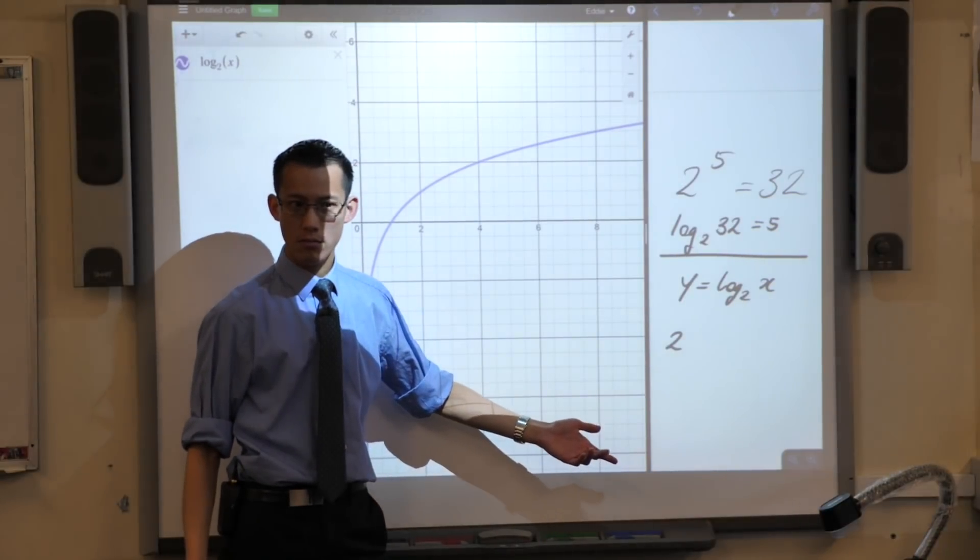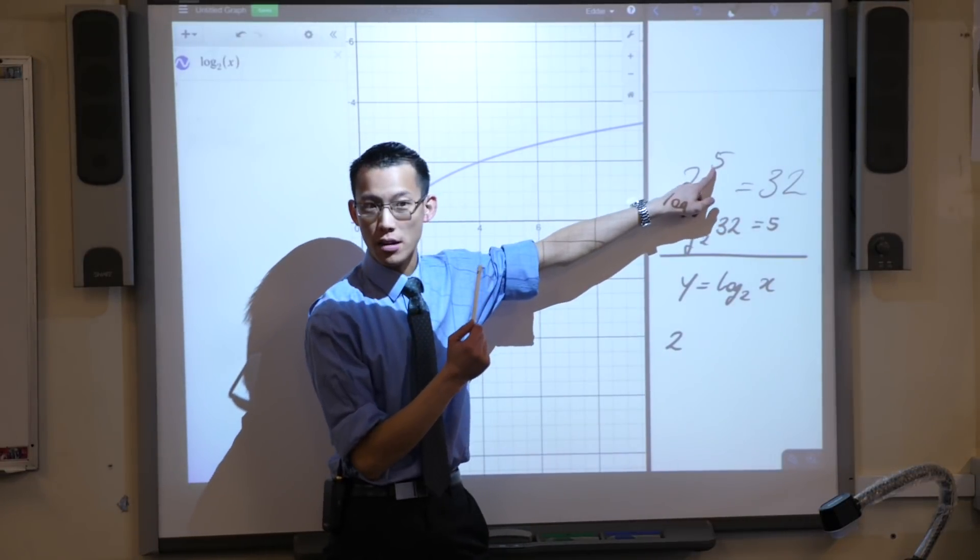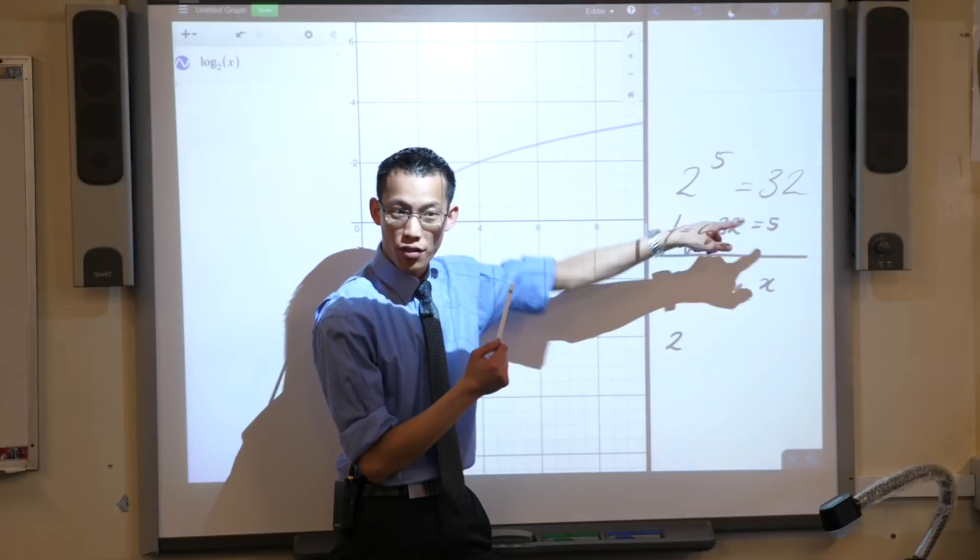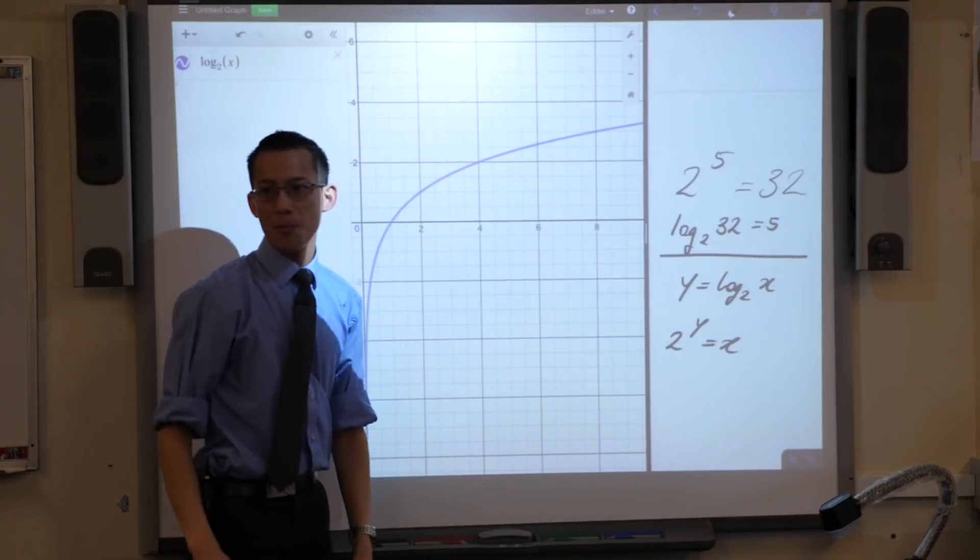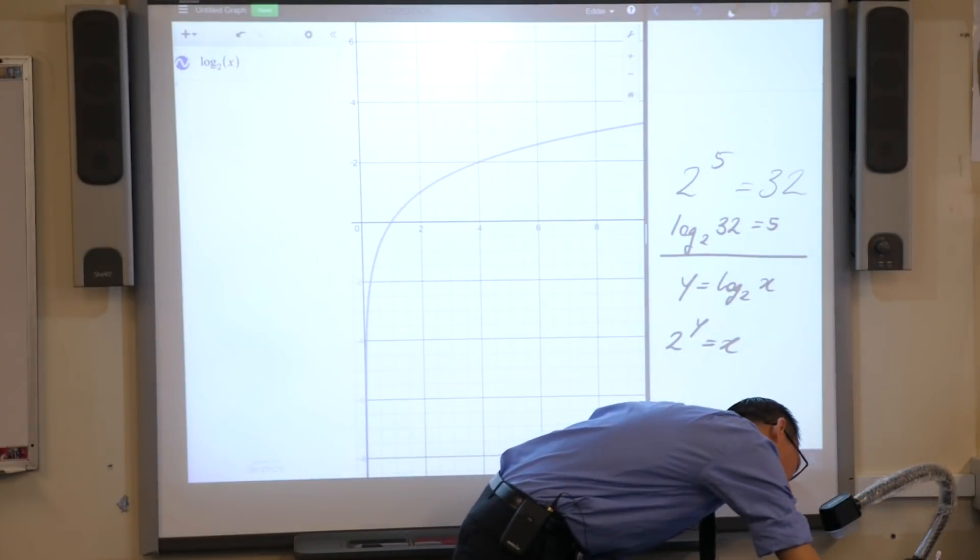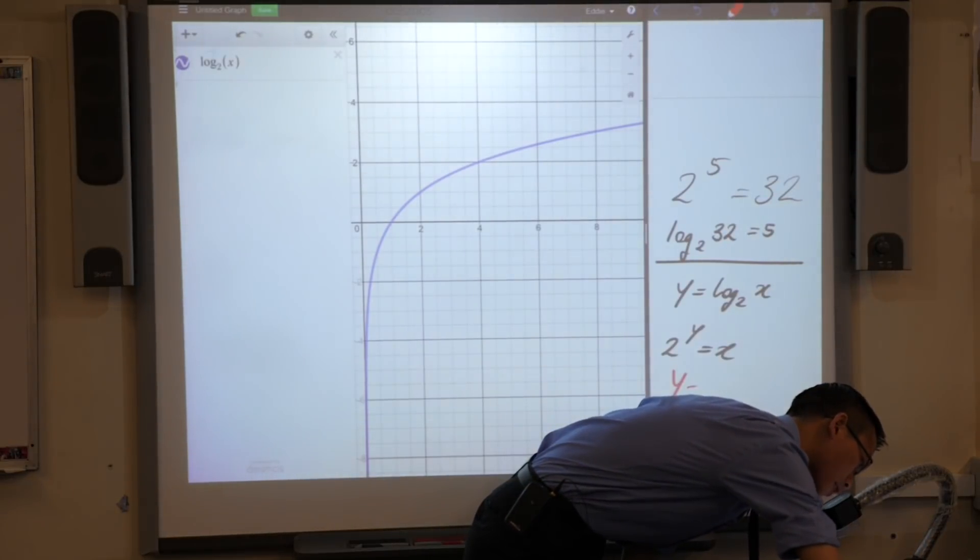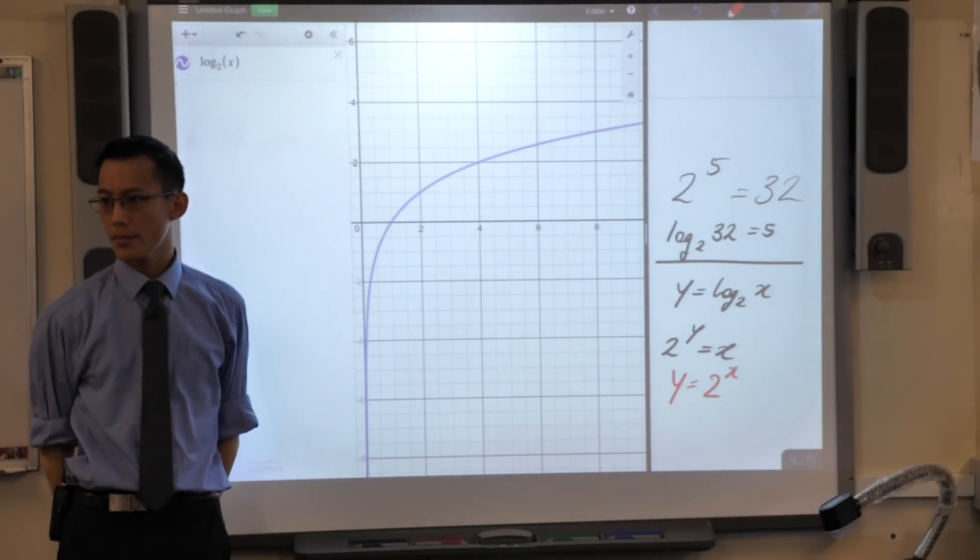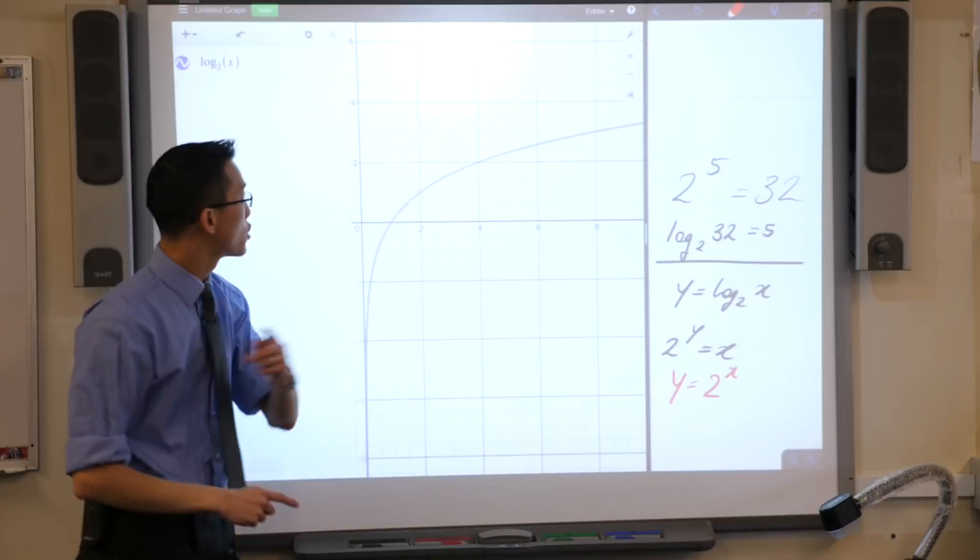See how the 5 is the power up here, and then it becomes the number over there. So therefore this is 2 to the power of Y equals X. Now we've graphed things a lot like this in the past, but not quite. We've graphed stuff like this. What's the difference between the black and the red? Do you see the X's and the Y's sort of swap places?